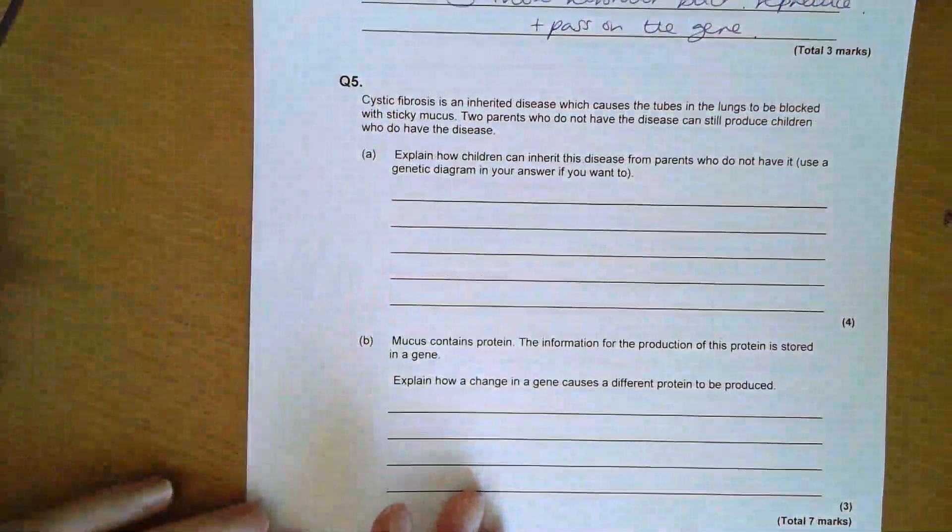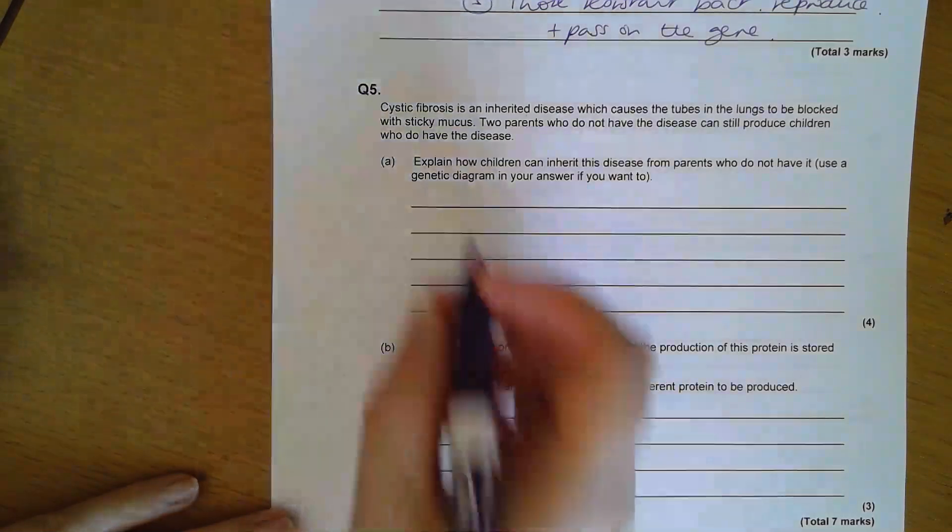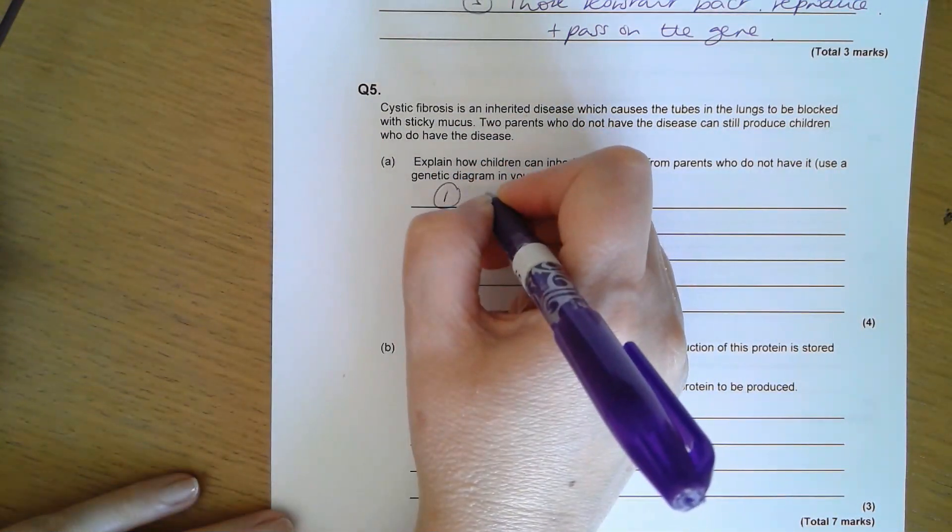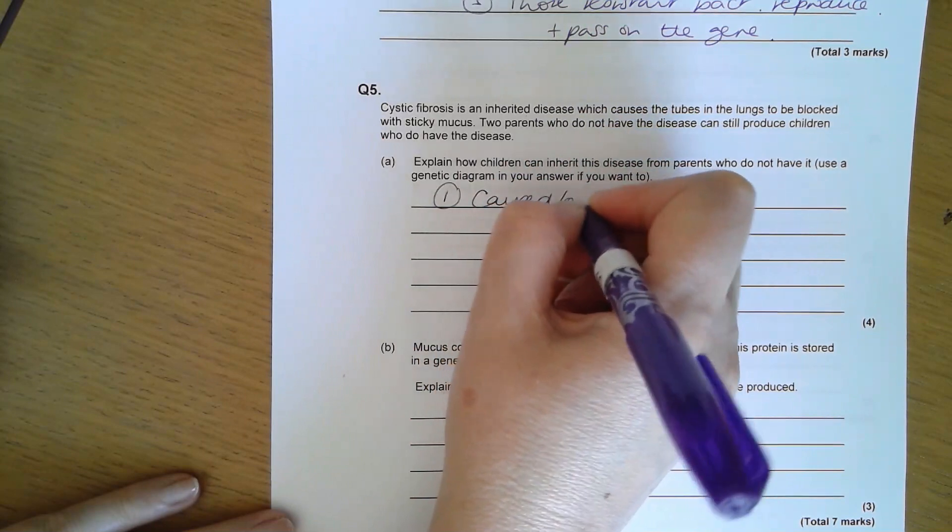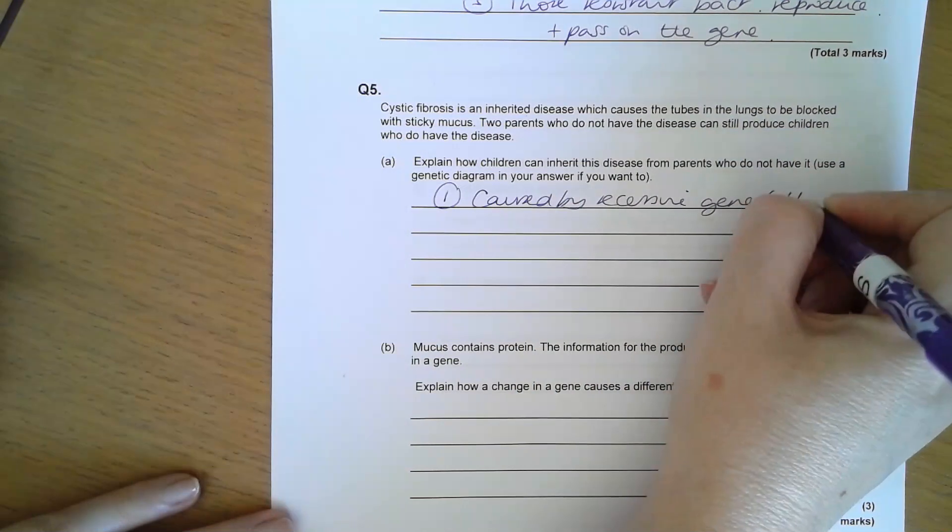Cystic fibrosis is an inherited disease causing the tubes of the lungs to be blocked with sticky mucus. Two parents who do not have the disease can produce a child that has the disease. Explain how the children can inherit the disease from parents who don't have it. You can use a genetic diagram if you want to. The first thing is that cystic fibrosis is caused by a recessive gene or recessive allele.